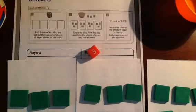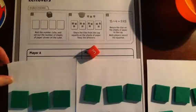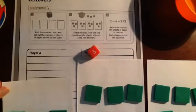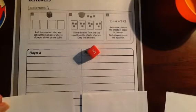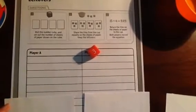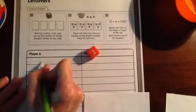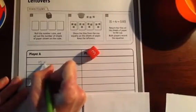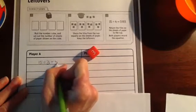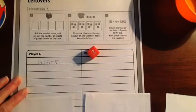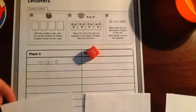But our division problem then is 15 divided in between three people or we could say three places is going to be five. All right, so we'll write that equation. 15 divided into three groups equals five. Okay, with no leftovers.